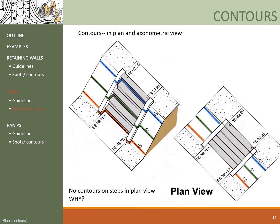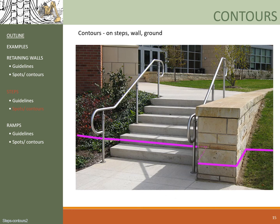Regarding contours — same as retaining walls — no contours should be drawn on the steps in the plan, because that simply adds confusion. Here is one additional example of how contours run from the landscape to the stairs, then around the retaining wall, and then connecting back to the slope on the right.